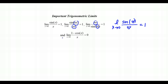The second important trig limit states that the limit as x approaches 0 of (1 − cos x) over x equals 0. Direct substitution on sin(x)/x gives 0/0, which is indeterminate, and there's no algebra to resolve it — so both limits are given facts. Because they come up so often, each is important to memorize.